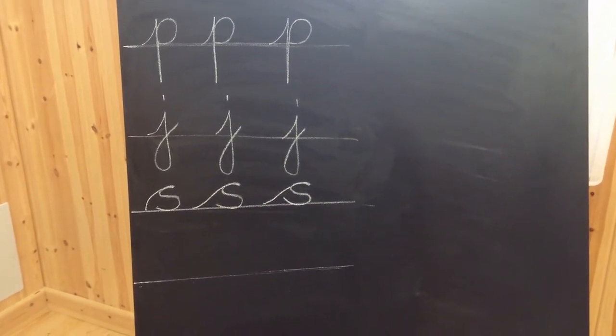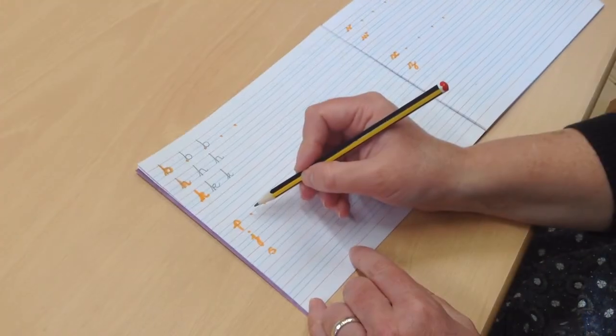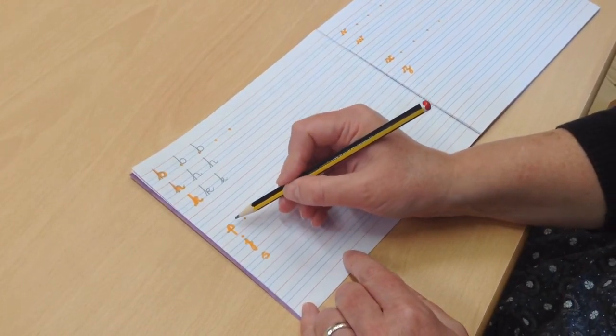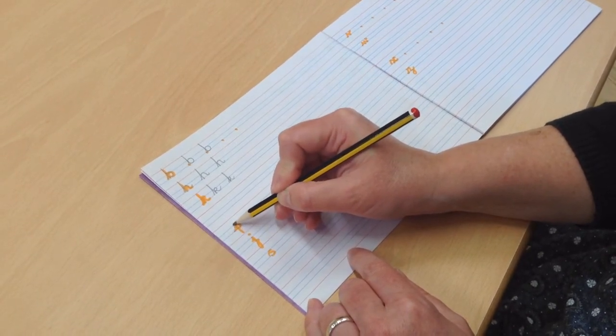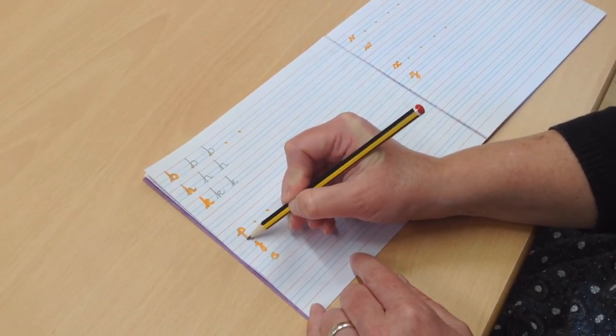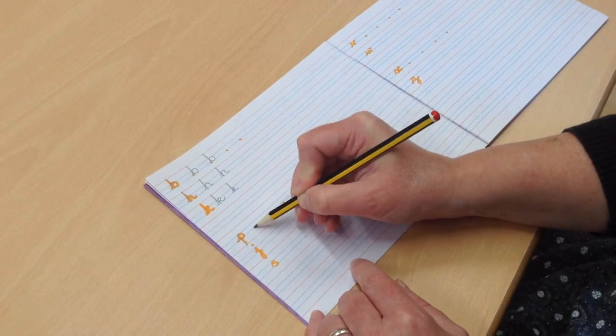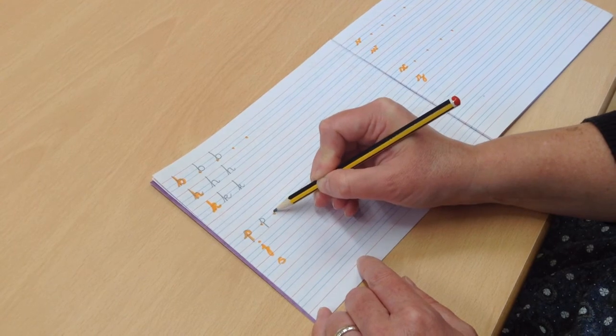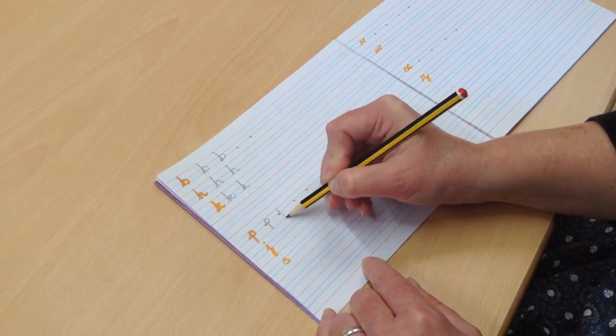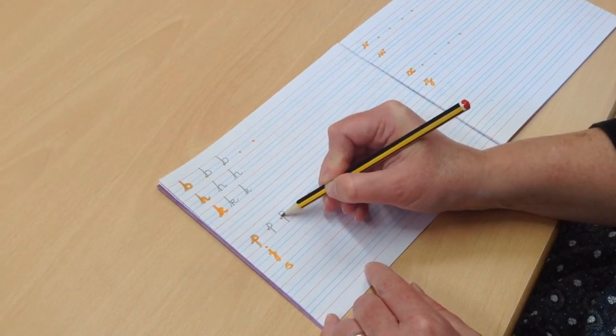Watch now as we write in our books. Make sure when you write the P that the body of the P sits on the line and then the bottom part hangs under the line. Otherwise the children end up writing capital letters in the middle of words. So lead in, down to the bottom, body of the P there.